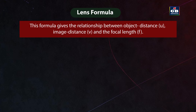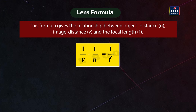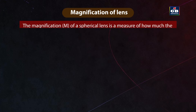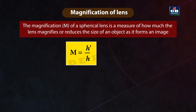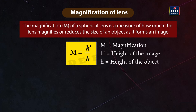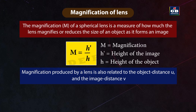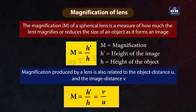Lens formula: the relationship between object distance (u), image distance (v), and focal length (f) is: 1/v - 1/u = 1/f. Magnification (m) of a spherical lens: m = h'/h, where h is the height of the object and h' is the height of the image. Magnification is also related to distances: m = h'/h = v/u, where v is the image distance and u is the object distance.